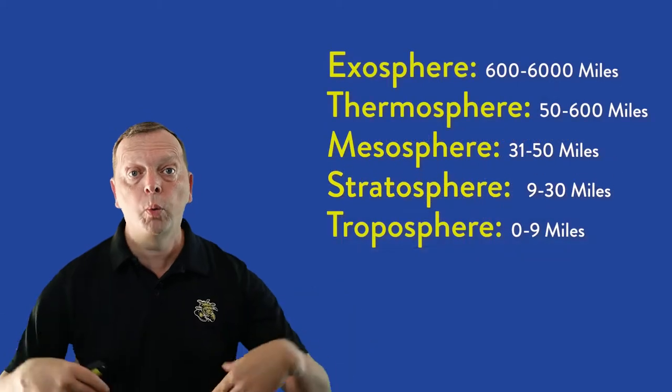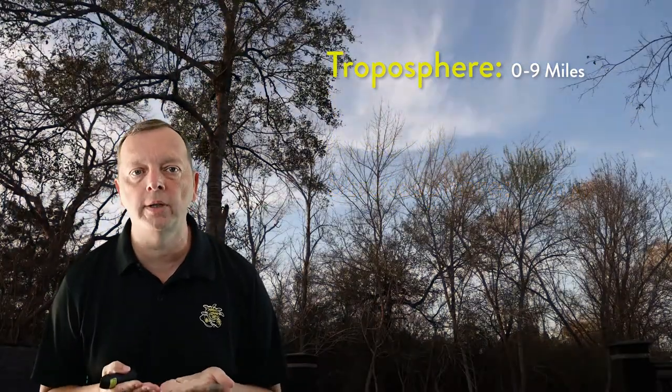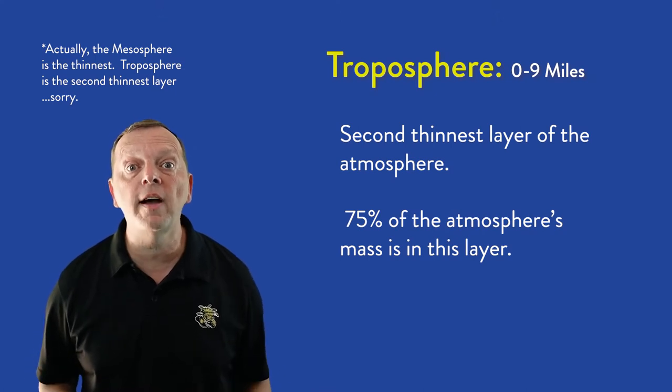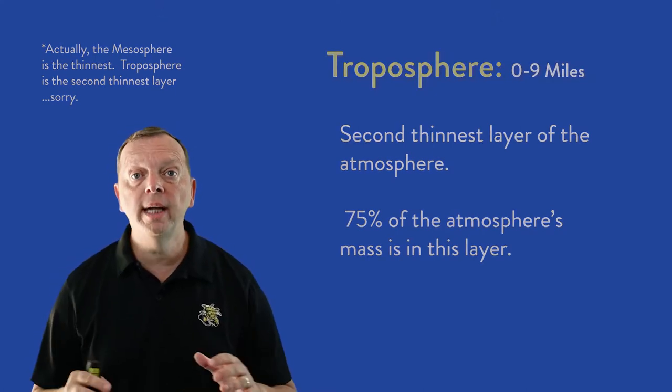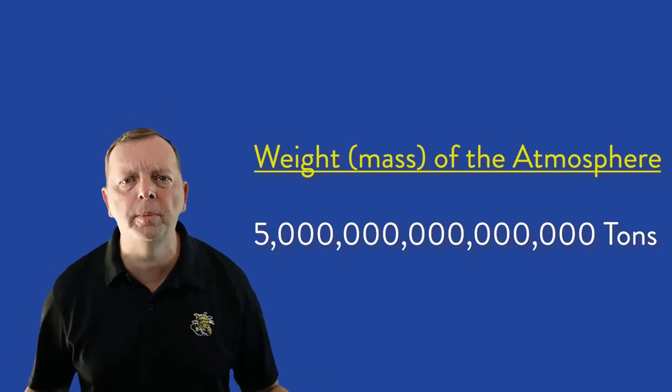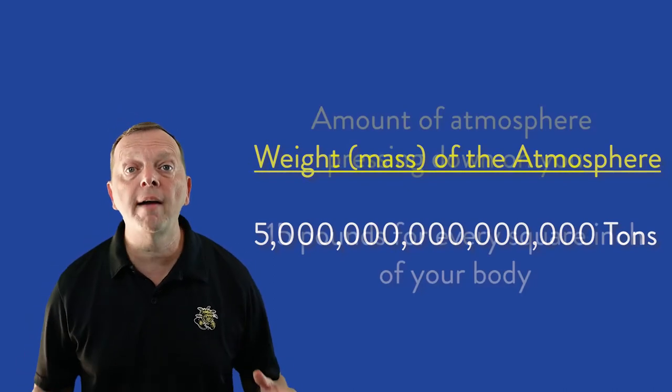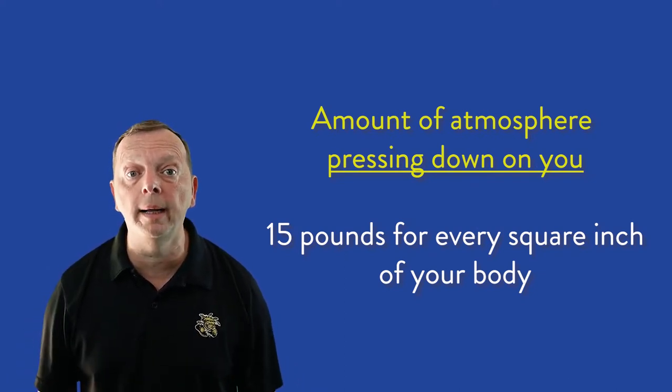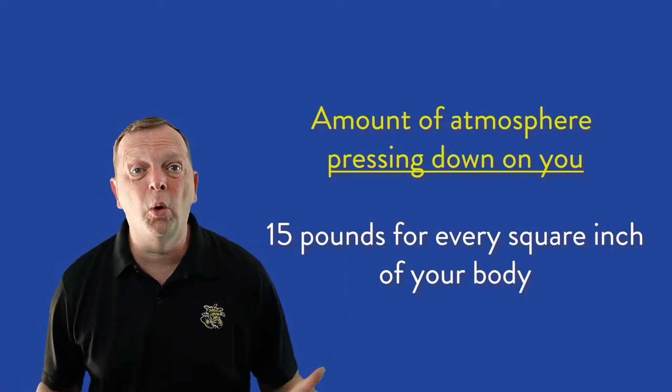Then there is the troposphere, which is what we live in, stretching from the ground to about 9 miles high. While this is the thinnest layer, it also contains 75% of all the atmosphere's mass. Now, altogether, all the gases in the atmosphere actually weighs an incredible 5 million billion tons, but it's distributed around the entire Earth. The average weight actually pressing down on you is 15 pounds for every square inch of your body. But you don't notice it because it's normal for us. We've always had that around us. The atmosphere's importance is pretty easy to understand. As each breath you take, you're inhaling and exhaling this atmosphere.